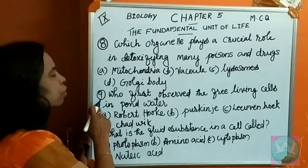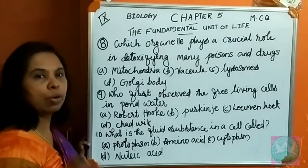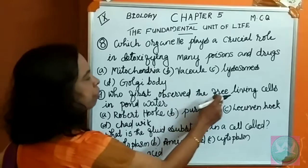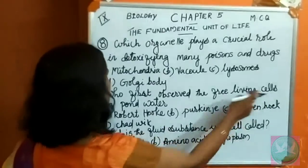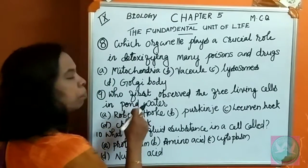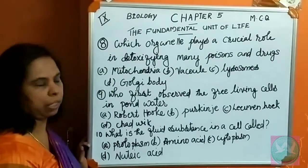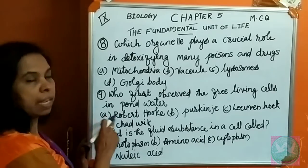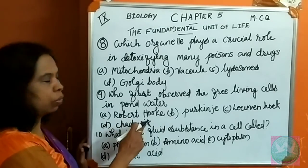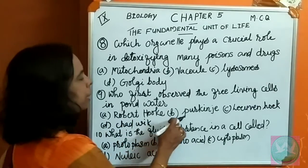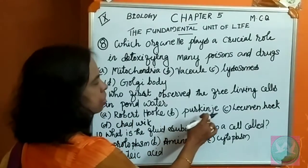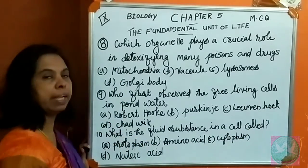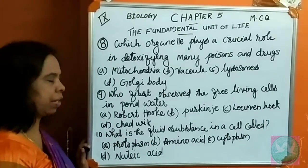Ninth question: who first observed free-living cells in pond water? Options: A. Robert Hooke, B. Purkinje, C. Leeuwenhoek, D. Chadwick.